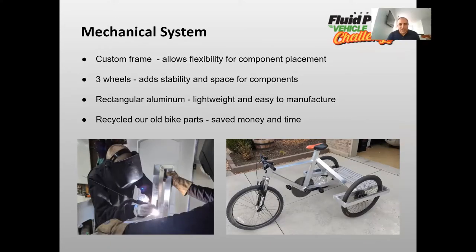For the mechanical system, we customized our frame to have a three-wheel vehicle and modeled the rear rack mount. This allows us more flexibility for the components and adds stability and space. The materials we use for the frame is rectangular aluminum T6061. It's lightweight and easy to manufacture. For the old bag, we recycled it to save money and time.